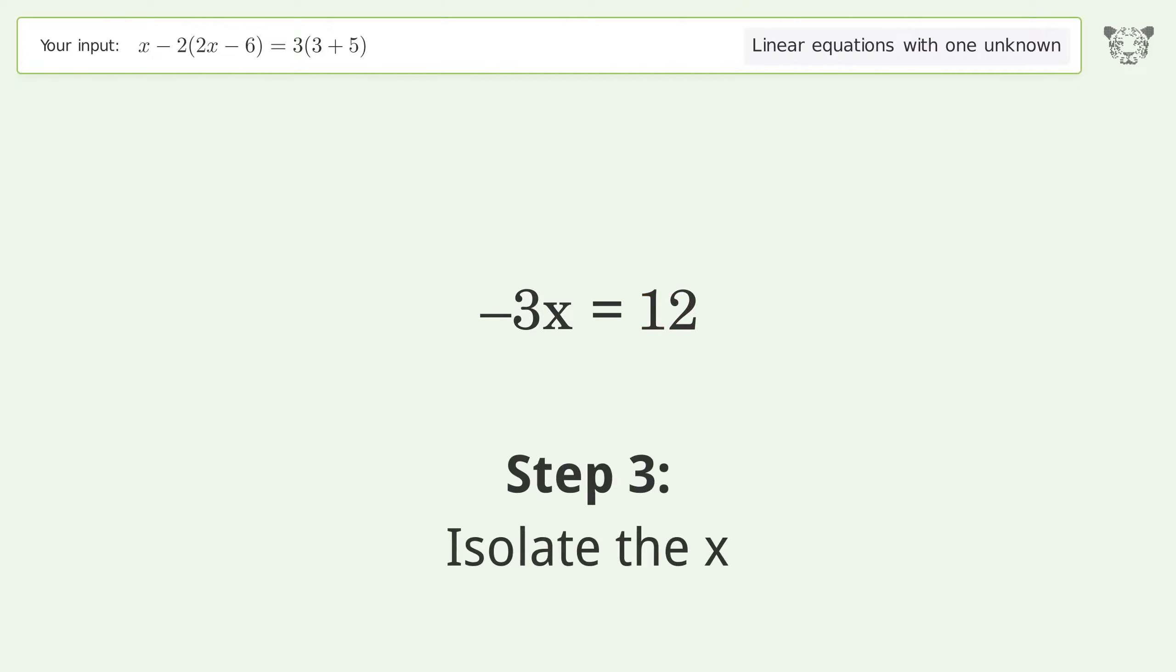Isolate the x. Divide both sides by negative 3. Cancel out the negatives.